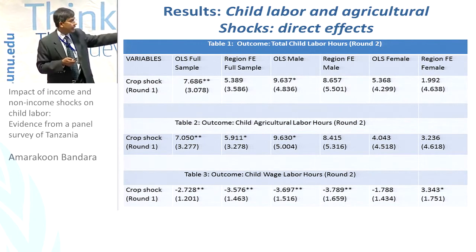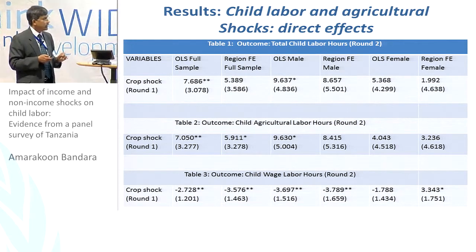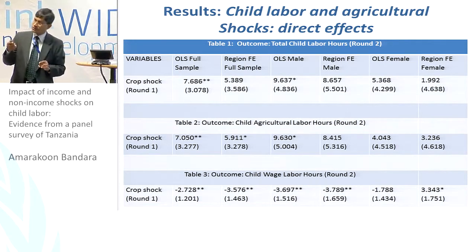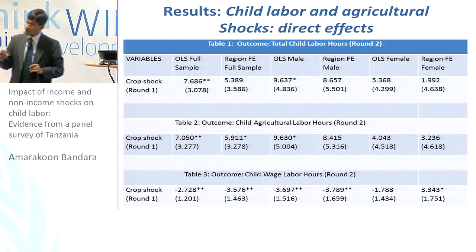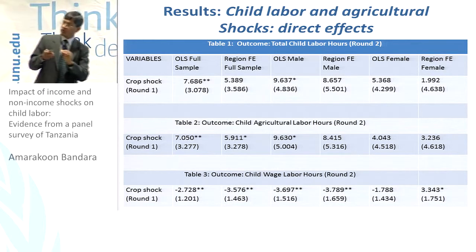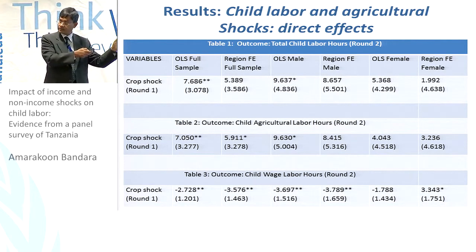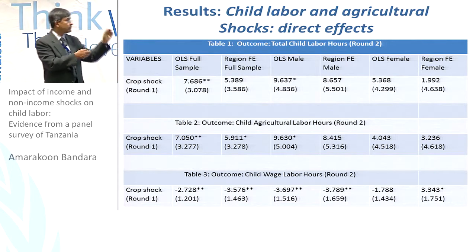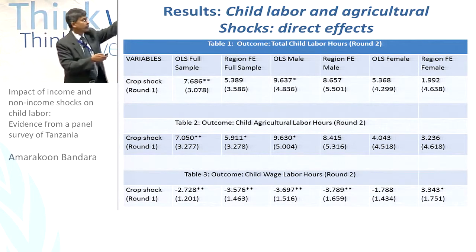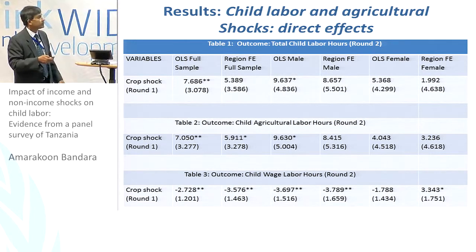What this suggests is that when there is a crop shock, children are moving from wage labor to agriculture, as seen by comparing the wage labor and agriculture labor results.